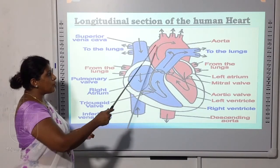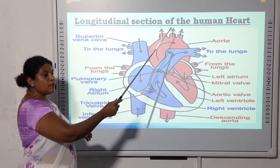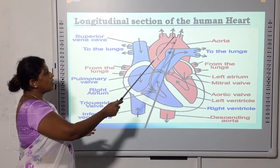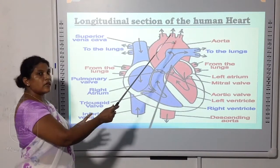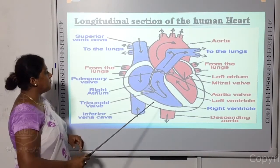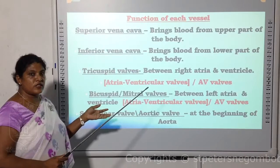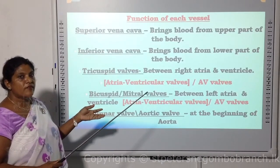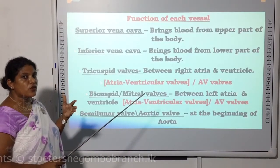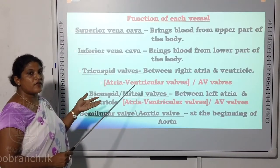From the aorta, you can find three branches at the top. The middle one supplies blood to your head, and the other two vessels supply blood to the shoulder regions. You can go through the diagram in your textbook and find the functions of each and every vessel.